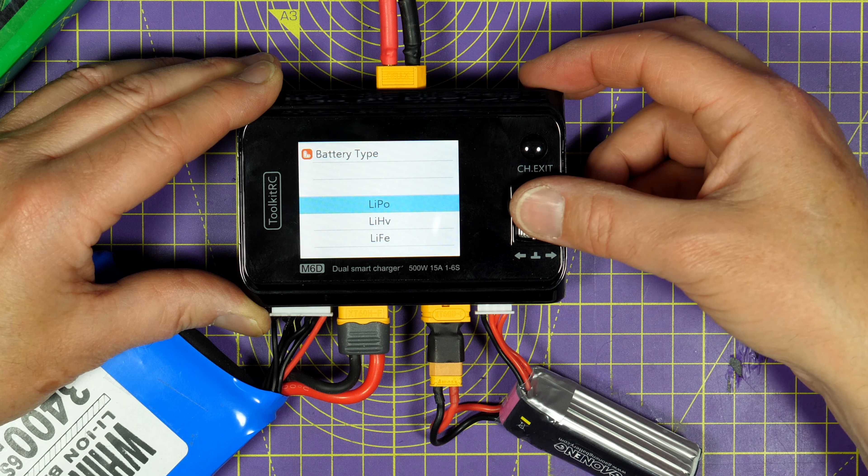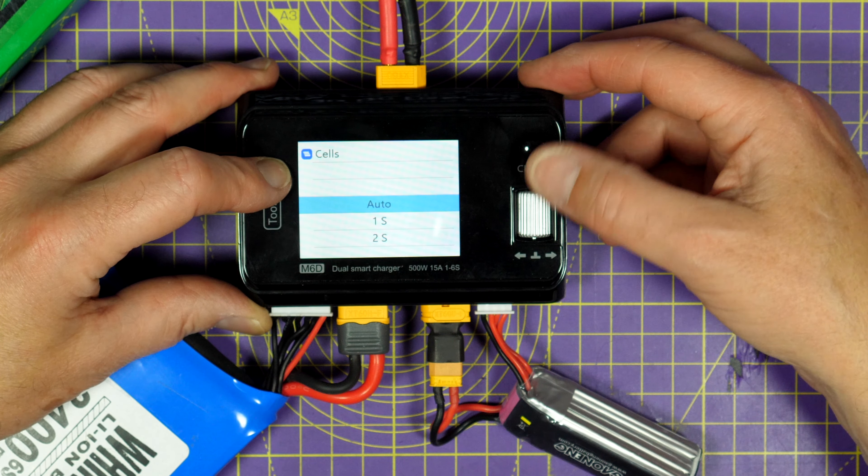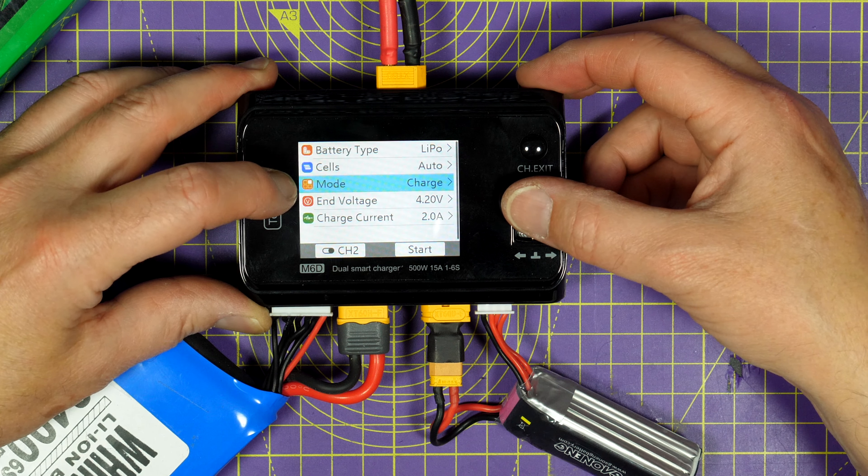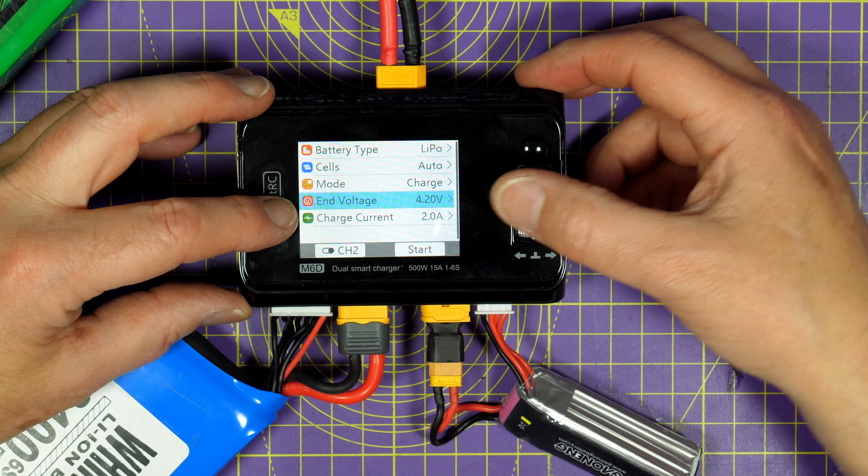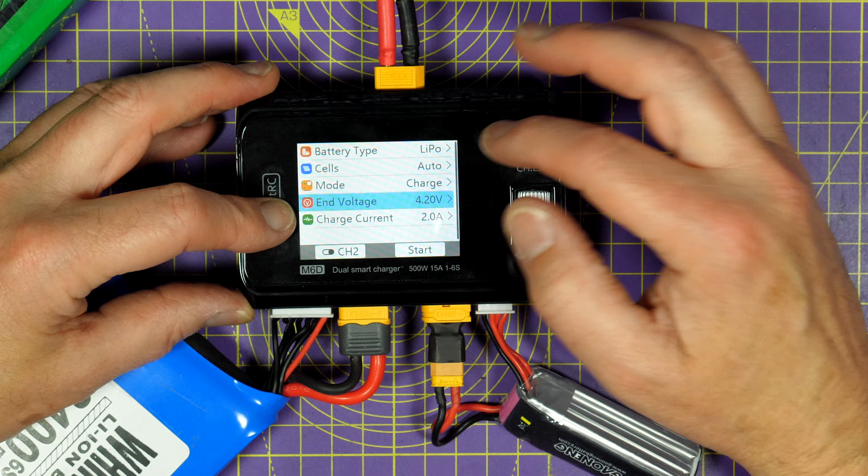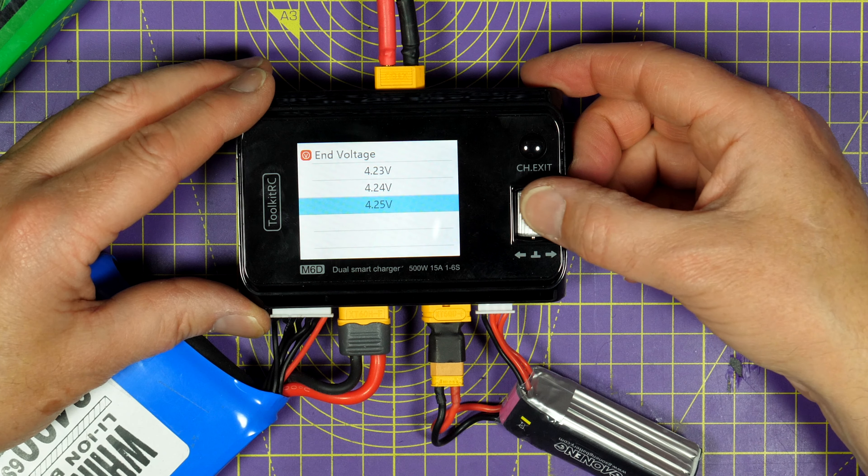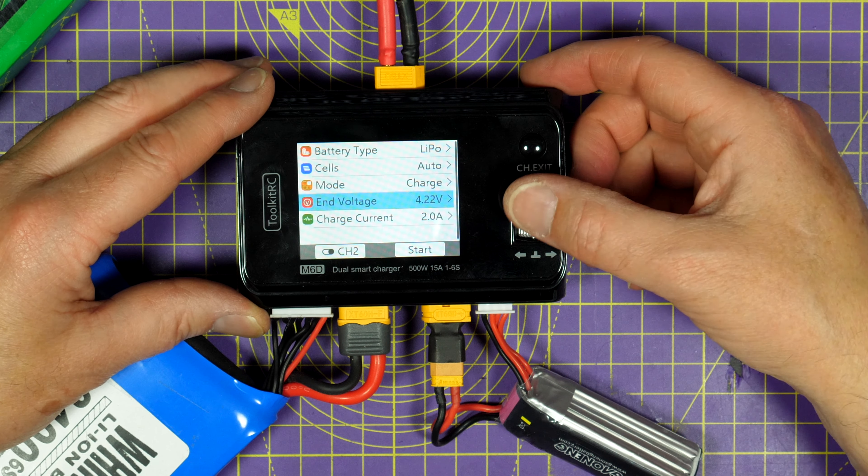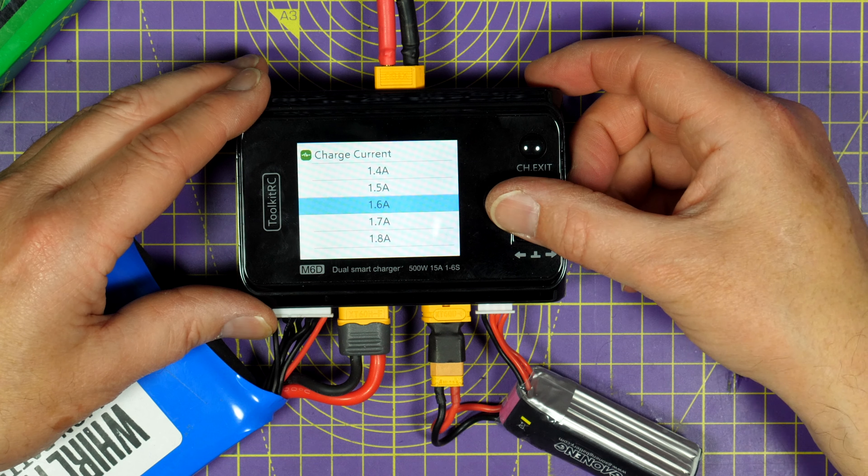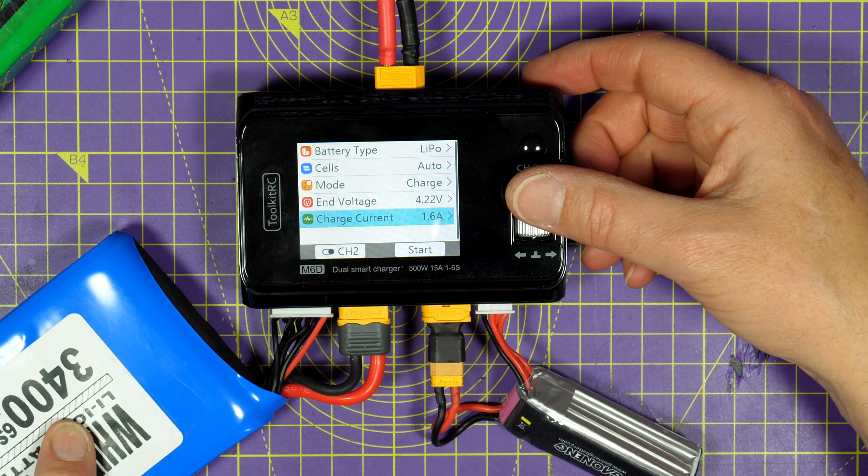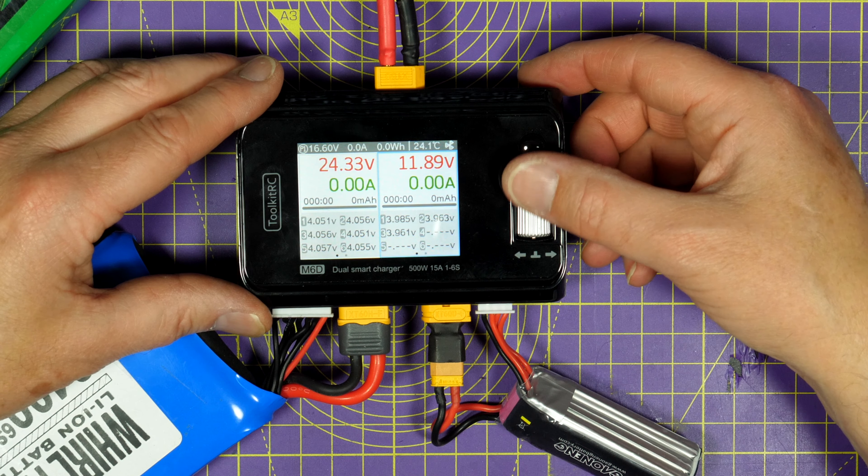So if we go back to LiPo, which is what we want, cells it will detect, we can automatically detect or we can choose whichever you like. You can choose between charge, discharge and storage charge. All fairly normal stuff. The end voltage it knows is 4.2 because it's a LiPo. Although this is lithium ion, I've charged them as LiPos because of the end voltage. But you can choose the end voltage that you want if you've got something special you need to do. And in here you choose your charging current. This particular battery likes to be charged at 1.6 volts. These are NCR 18650 cells.